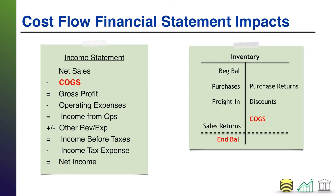If your choice of cost flow — given whatever economic trend is going on, whether inflationary or deflationary — results in a relatively higher cost of goods sold compared to another cost flow choice, then your gross profit will be lower, your income from operations will be lower, and your income before taxes will be lower. A nice benefit of this is that if income before taxes is lower, your income tax expense will also be lower.